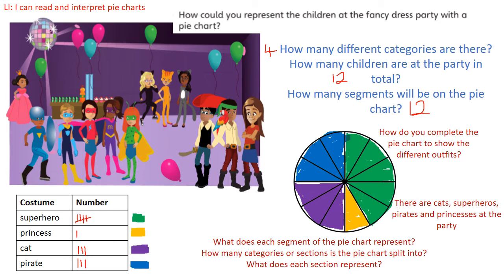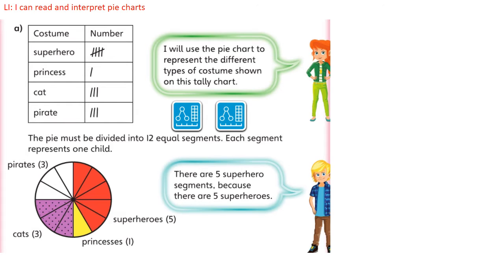So there we have it — there's our pie chart representing all children at the party. As you can see, we've got our tally chart completed and we've divided it into 12 segments. Can you remember why we divided it into 12? We divided it into 12 because there are 12 children, and then each segment in this case represents one child.